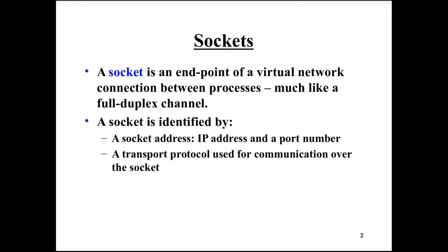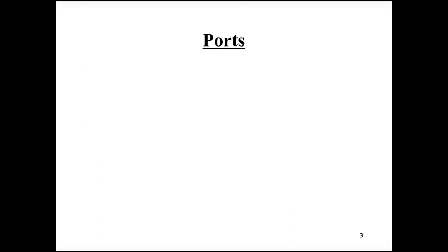An established connection between two sockets has five identifying parameters: the sending side's IP address and port number, the receiving side's IP address and port number, and the transport protocol.